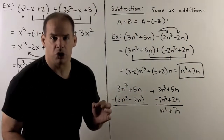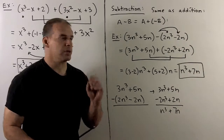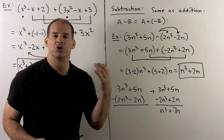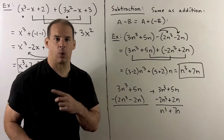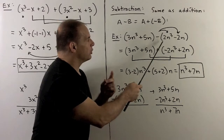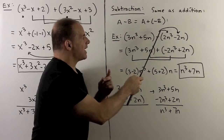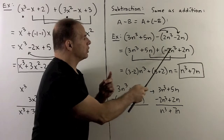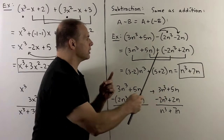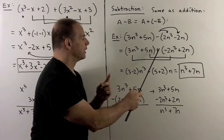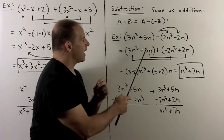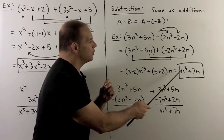Now we move on to subtraction. The key difference: a minus b equals a plus minus b, so we're just going to distribute that minus sign and then add as before. For instance, take 3n cubed plus 5n minus the quantity 2n cubed minus 2n. I'll distribute the minus sign to each term: I get minus 2n cubed, and minus times minus 2n gives plus 2n. Now we add as before. Grouping like exponents: 3 minus 2 gives n cubed, and 5 plus 2 gives 7n, so the answer is n cubed plus 7n.